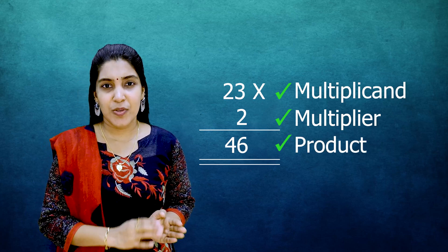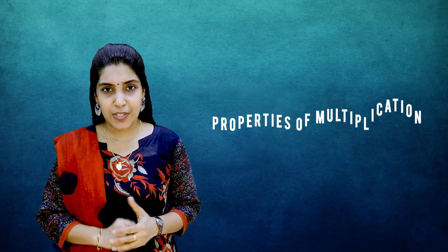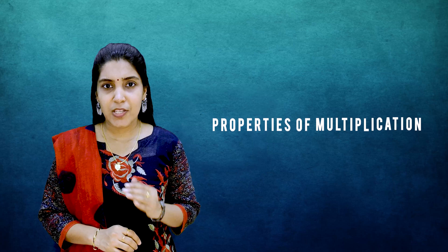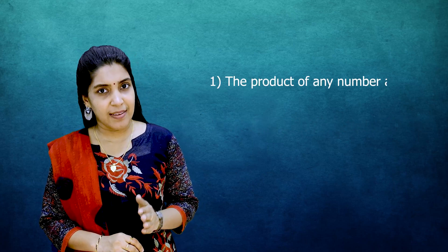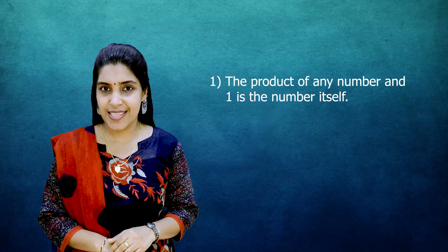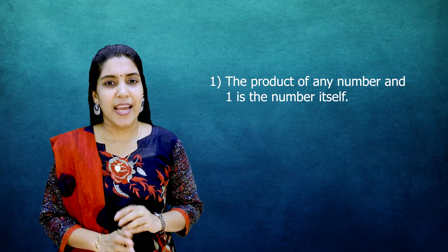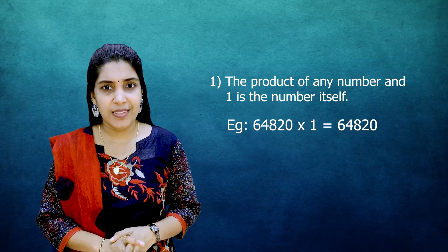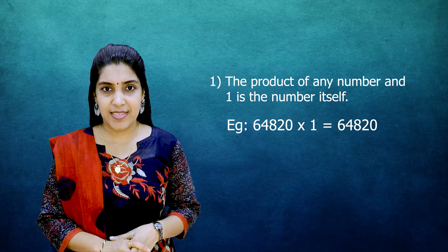I hope you understood the basics. Next we are going to discuss the properties of multiplication. The product of any number and 1 is the number itself. This is one of the important properties. Any number if you are multiplying with 1, the result will be that number itself.